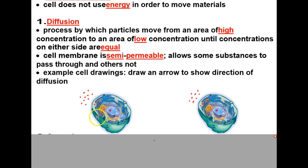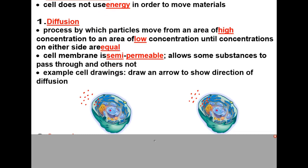On the inside of the cell we have five of these same particles. So clearly there is a higher concentration of these particles outside the cell and a lower concentration inside the cell. If these particles are able to pass through the semi-permeable membrane, they will move from the area of high concentration to the area of low concentration.